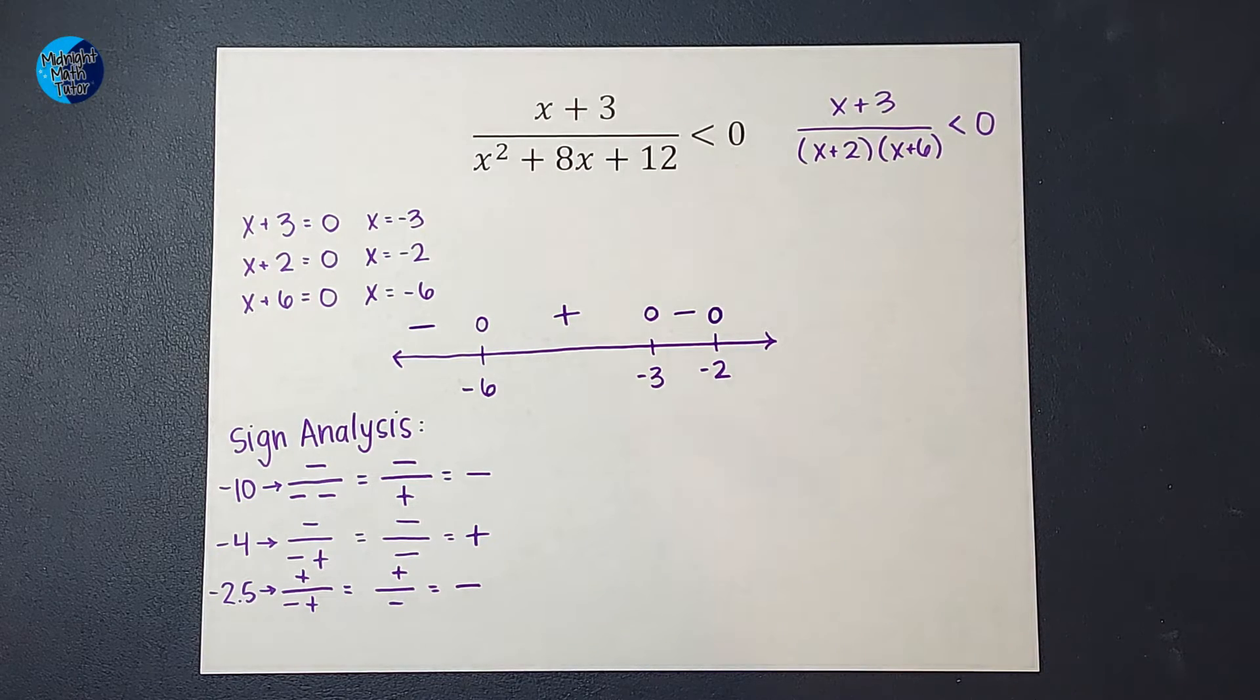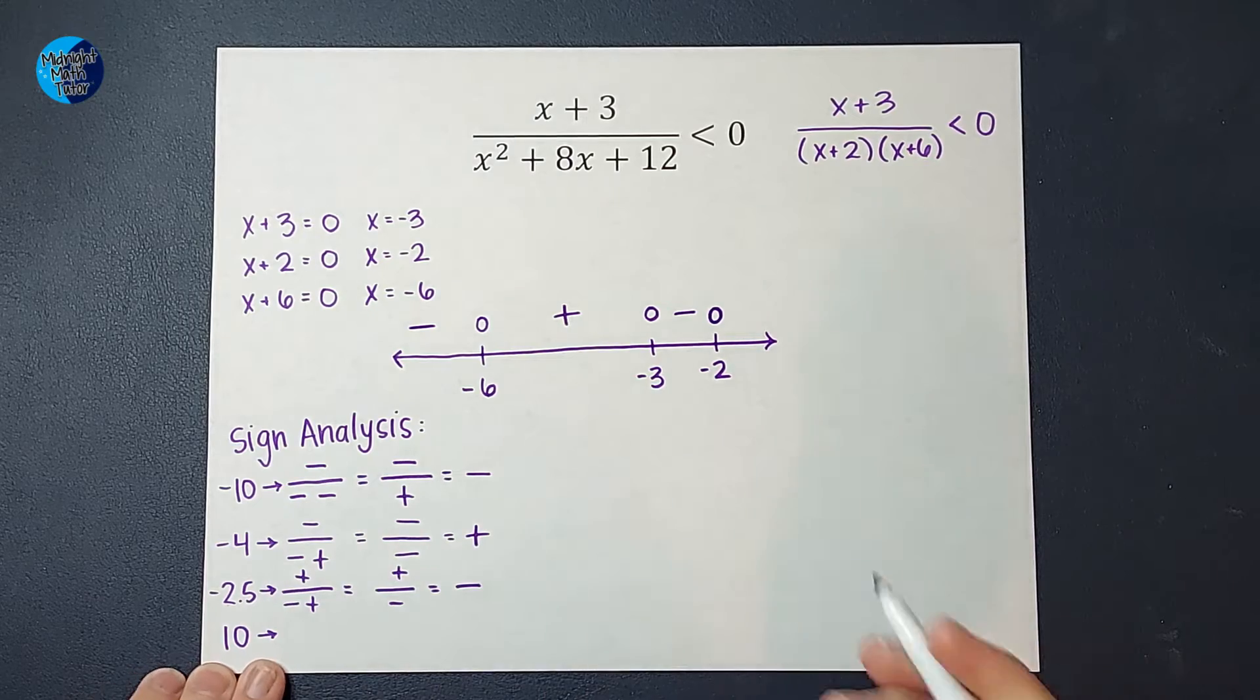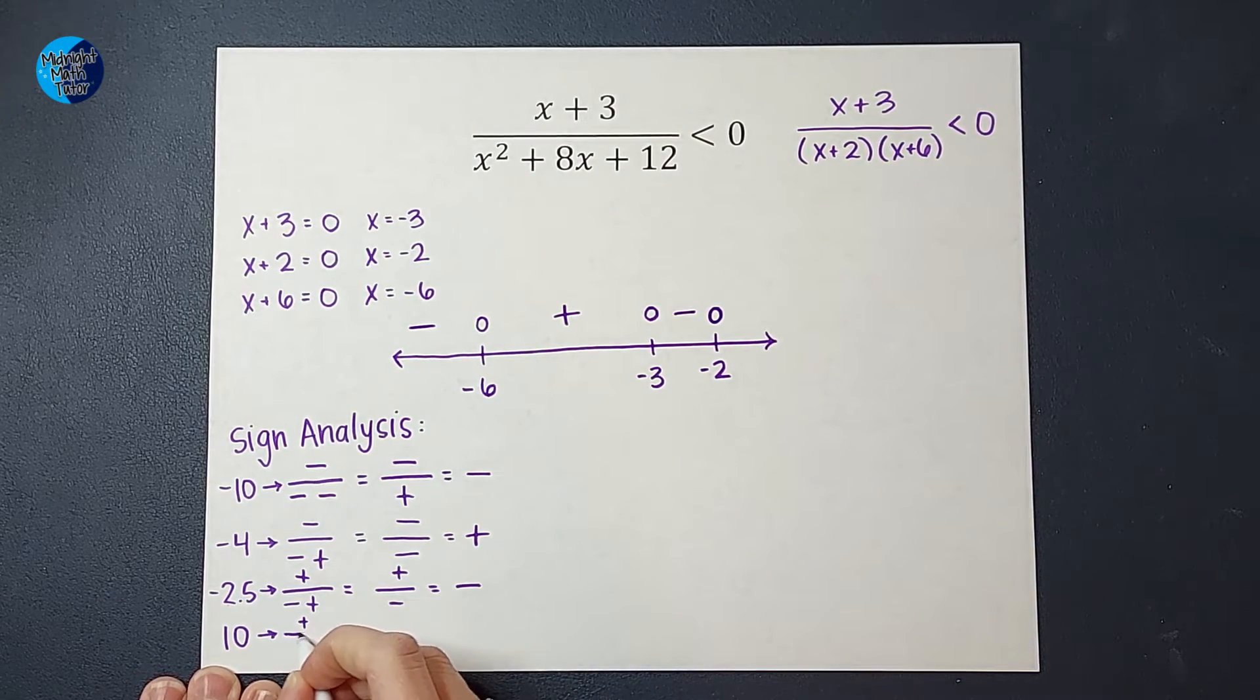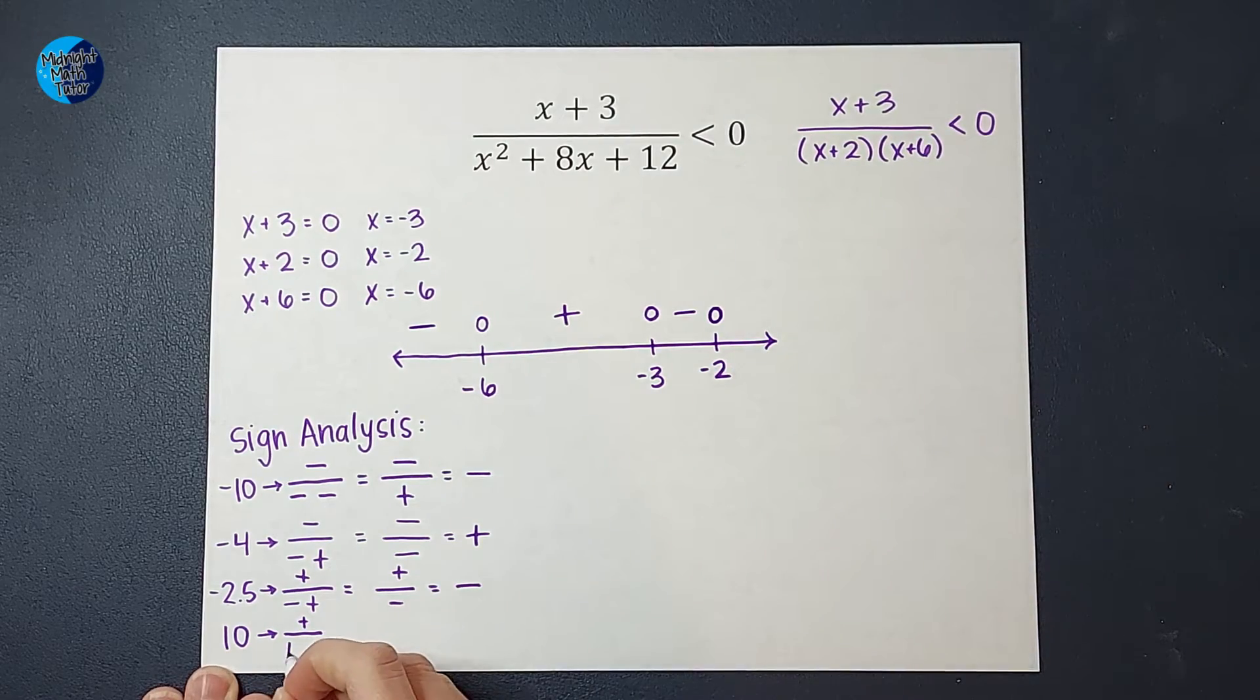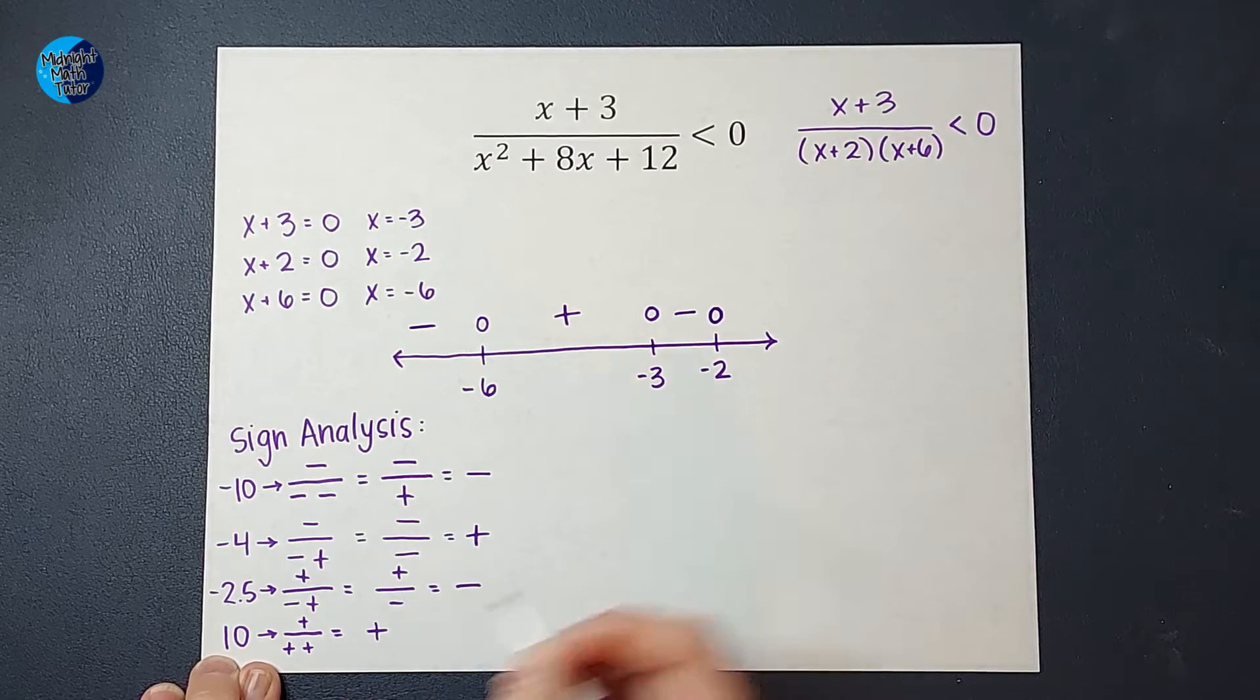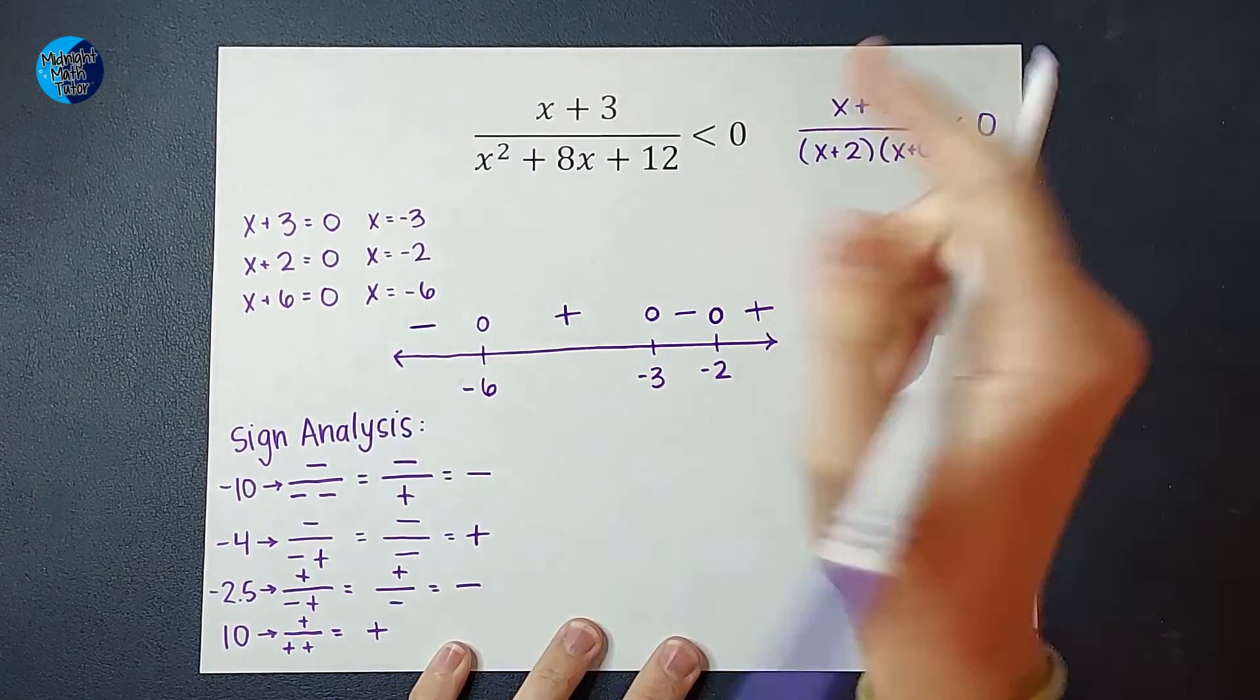All right, I need a number to the right of negative 2. I can pick any number. Let's pick 10. Why not? So when I plug in a positive 10, I get 10 plus 3 on top, which is positive. 10 plus 2, which is positive. And 10 plus 6, which is also positive. And all those positives would end up being positive.